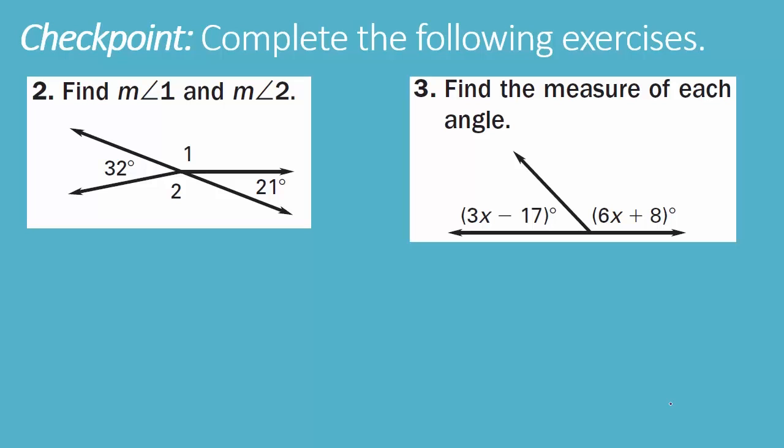Checkpoint problems 2 and 3 are yours. For checkpoint 2, find the measure of angle 1 and angle 2. Hint: the line is straight, so the angles add up to 180 degrees — they form a linear pair. For checkpoint 3, find the measure of each angle by first finding the value of x, then plugging it into each expression. Remember, it's a straight line so the angles add up to 180 degrees. That's it — I'll see you all soon.